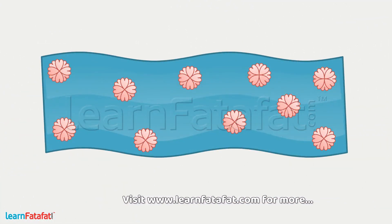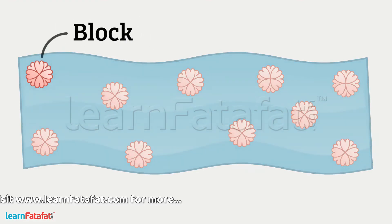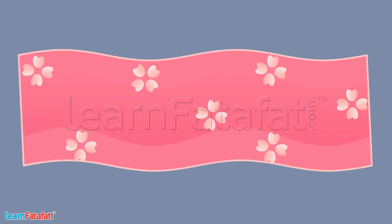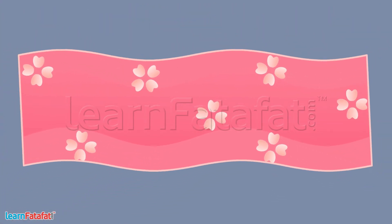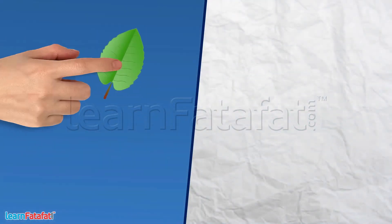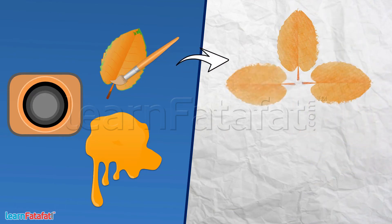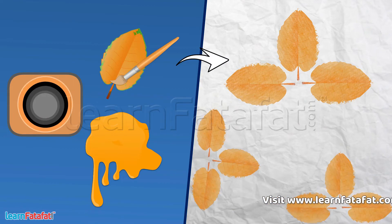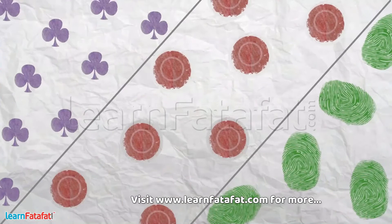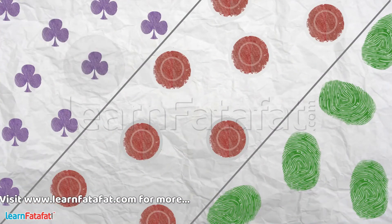Look at this saree. It is designed using block prints. Here is another one. Have you seen such sarees? In such designs, the same block is used in different ways to make a pattern. Let us try to make such a pattern. Take a leaf. Put some watercolour on the leaf and take its stamp on paper. Use the leaf in different ways to make a pattern. You will get a nice pattern. In the same way, you can make different patterns using different leaves, bottle caps, thumb prints, etc.